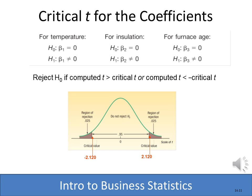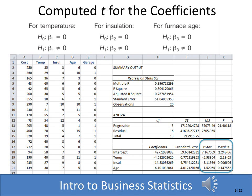Using n minus k plus one degrees of freedom, we looked up a critical value for t of 2.120. Excel has already computed the t-stats for us. The t-stat for temperature is negative 5.93, for insulation is negative 3.119, and for age is 1.5. Comparing to the critical value of 2.120, we reject the null hypothesis for both temperature and insulation, indicating they are significant predictors of heating cost.